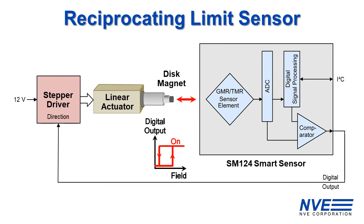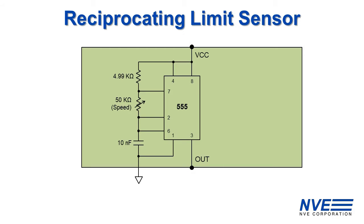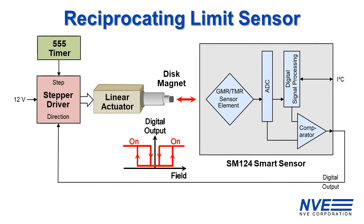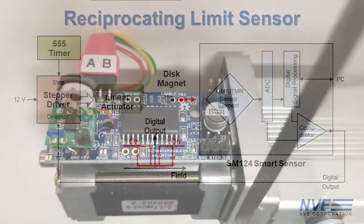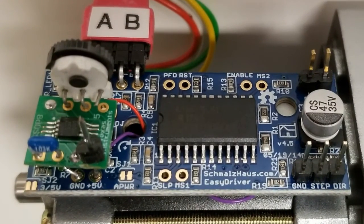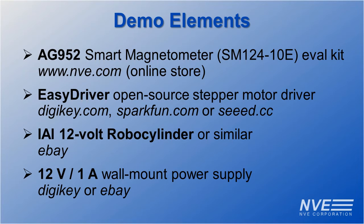And the magnetometer works with either magnet polarity. A 555 timer provides step pulses. Here are the stepper driver and stepper timer boards. Here are the main elements in this demo and where to get them.